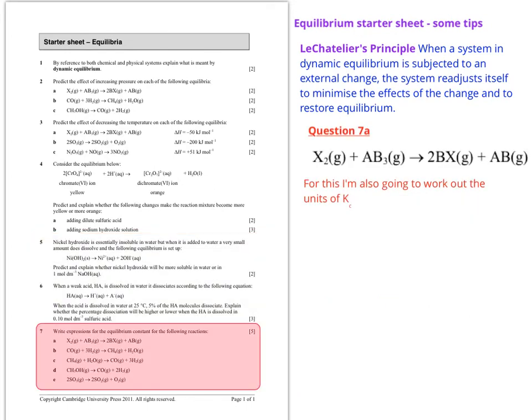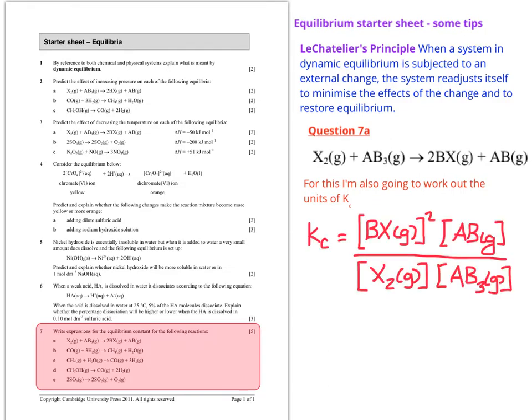Looking at question number 7 I'm going to do 7a. Now they only ask you to do the Kc expression, the expression for the equilibrium constant. I'm going to do the Kc expression and also show you how to work out the units so you can apply that to the other ones as well. I start by putting all of the products into what we call concentration terms. The concentration term is the square bracket you see.